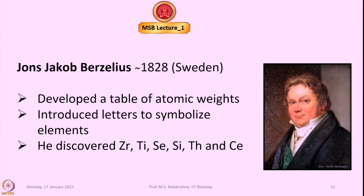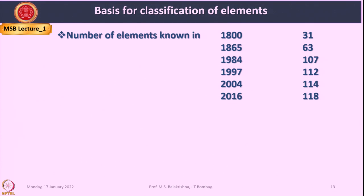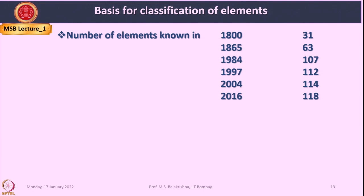John Jacob Berzelius, a Swedish chemist, developed a table of atomic weights and introduced letters to symbolize elements. He discovered, besides previously known elements, zirconium, titanium, selenium, silicon, thorium, and cerium. Regarding the chronological growth: in 1800, only 13 elements were known; in another 65 years that nearly doubled to 63; in the next 120 years it doubled again to 107. In 1997, 112 elements were known; in 2004 the number rose to 114; and in 2016 the modern periodic table was completed with 118 elements.